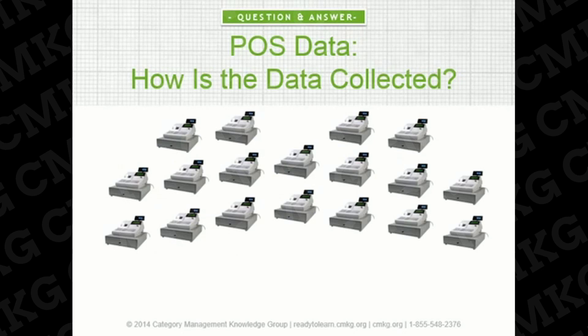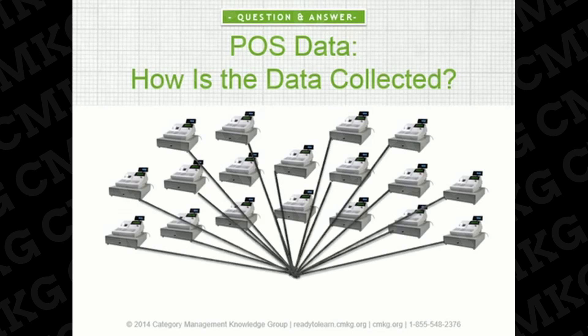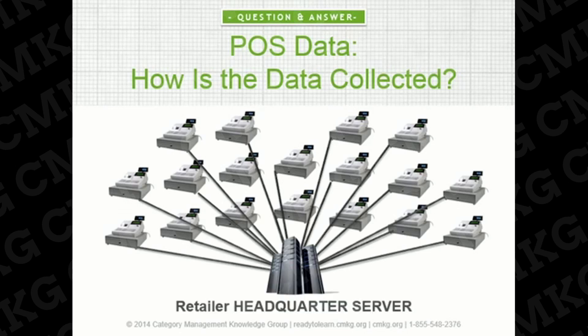Let's start at the beginning of the process — how is POS data collected? First, we have the clerk who scans each product in a transaction. Each transaction feeds into a central store computer. For a chain of stores, this can mean tens, hundreds, or thousands of computers. These transaction feeds are then sent to a server at the retailer's headquarters.